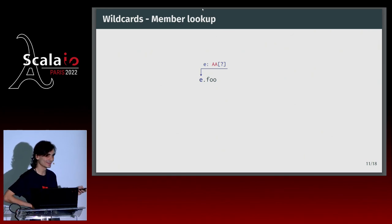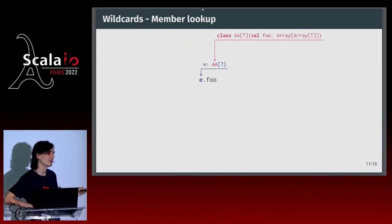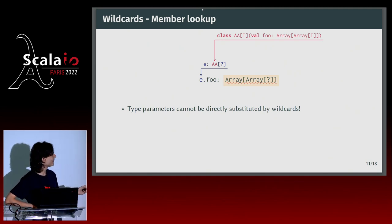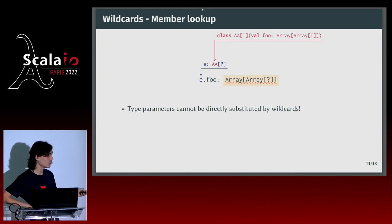Now the really tricky part: member lookup when you have a wildcard in the prefix. We have to look up foo in AA, where foo is a val of type Array of T. So what's the type of e.foo? You might think Array of Array of ?, but that doesn't work. This has been very confusing to everyone who has worked on the Java or Scala compilers, with numerous bugs related to it. Wildcards cannot be substituted freely. To convince you, here's how it leads to a crash.